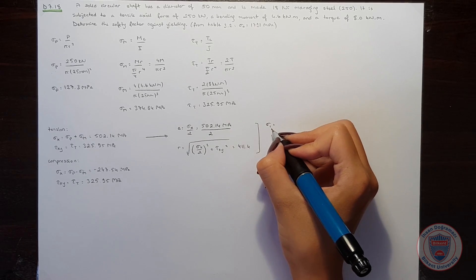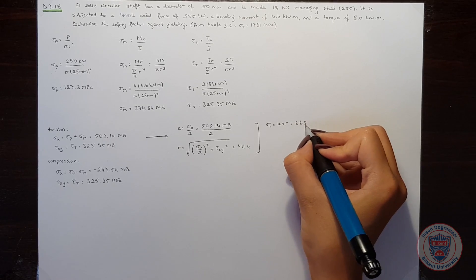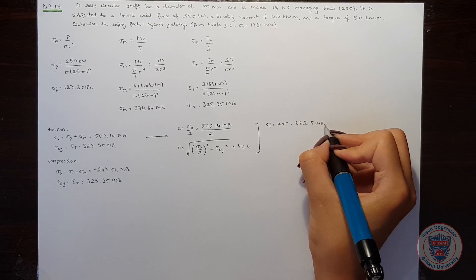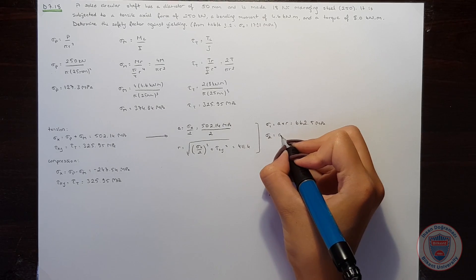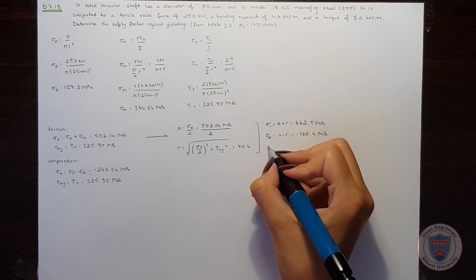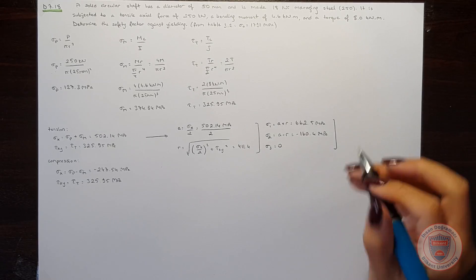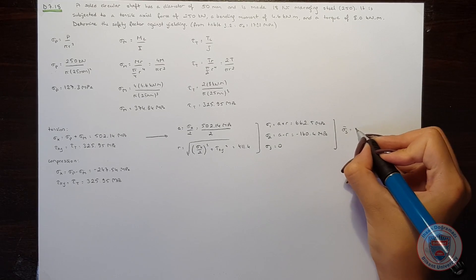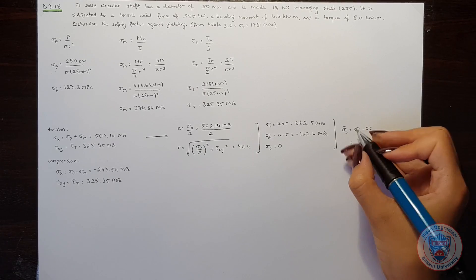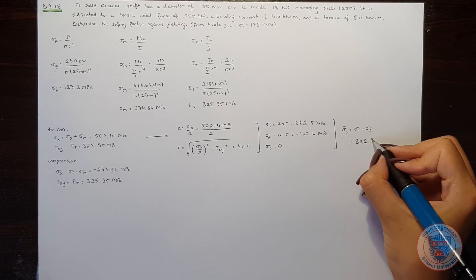Thus, sigma 1 will be equal to a plus r, which is 662.5 MPa. Sigma 2 will be equal to a minus r, which is minus 160.4 MPa. And sigma 3 will be 0. And when we consider these principal normal stresses, sigma 1 minus sigma 2 will give the largest value. And it will be sigma s. And it will be equal to 822.9 MPa.